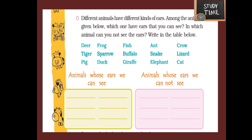You are going to write in this tabular column. The given animals are: deer, frog, fish, ant, crow, tiger, sparrow, buffalo, snake, lizard, pig, duck, giraffe, elephant, and cat.